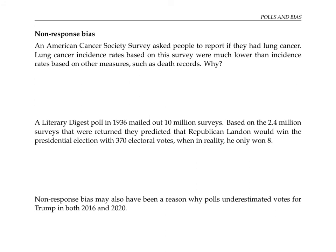In practice, even if we make a good survey and trust that people are answering it honestly, it can be very hard to get full response from everybody we ask. If only a fraction of the people we try to survey actually answer, that can lead to bias because the people who answer may be very different from the people who don't. When I was doing mathematical modeling of diseases, I used data from an American Cancer Society survey asking people to self-report if they had lung cancer. But the incidence rates I found based on the survey were much lower than rates based on other measures such as death records — one reason being that people who actually had lung cancer were less likely to mail back the survey because they were sick and occupied with other things.